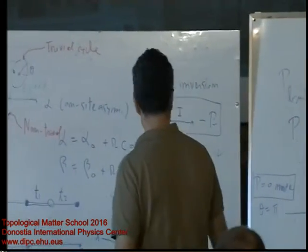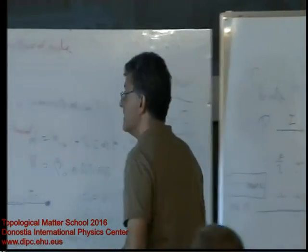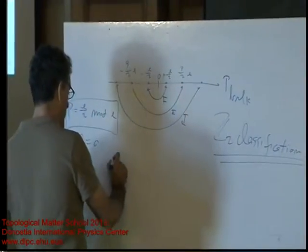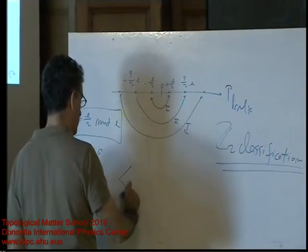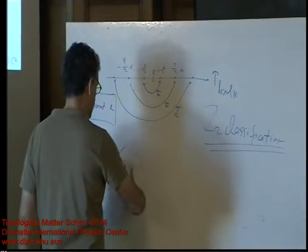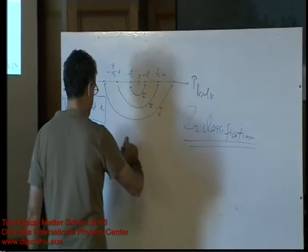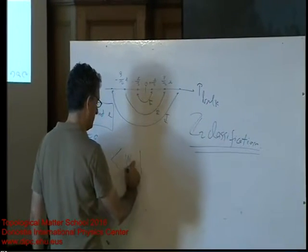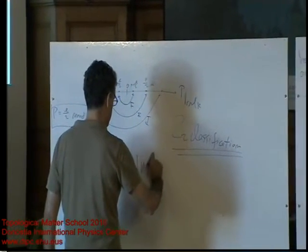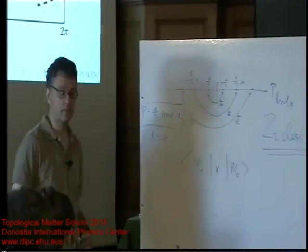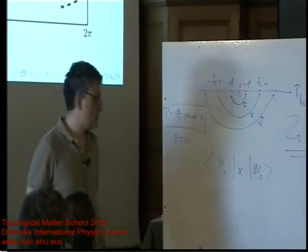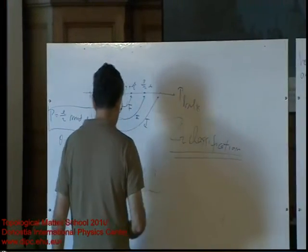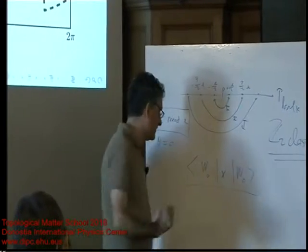The question for most of this session is: our definition of the bulk contribution to the electronic polarization was just the center of a Wannier function, for example the one at the middle of the chain, which gave the electronic contribution. The question I want to address for the next few minutes is how to define these under periodic boundary conditions.